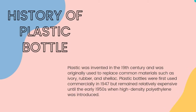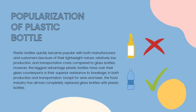Here is some history about plastic bottles. Plastic was invented in the 19th century and was originally used to replace common materials such as ivory, rubber, and shellac. Plastic bottles were first used commercially in 1947 but remained relatively expensive until the early 1950s when high-density polyethylene was introduced. Plastic bottles quickly became popular with both manufacturers and customers because of their lightweight nature, relatively low production and transportation costs compared to glass bottles. However, the biggest advantage plastic bottles have over their glass counterparts is their superior resistance to breakage, in both production and transportation. Except for wine and beer, the food industry has almost completely replaced glass bottles with plastic bottles.